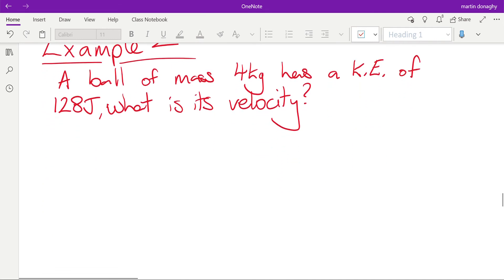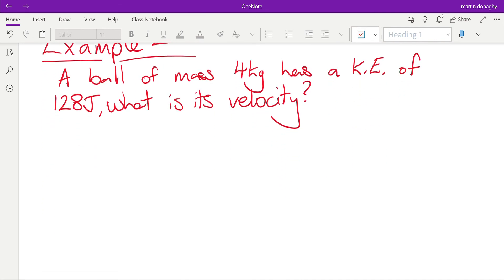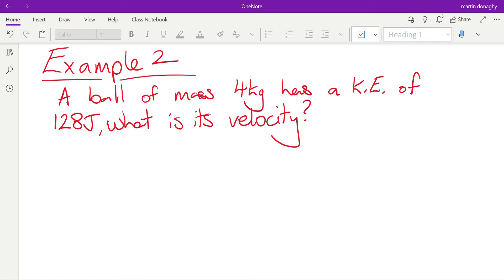Let's look at a second example. Kinetic energy is always trickier when you're trying to work out the velocity. It's some of the hardest maths you actually have to do on GCSE physics. So it says a ball of mass four kilograms (don't need to do anything, that's already in kilograms) has a kinetic energy of 128 joules. What is its velocity?